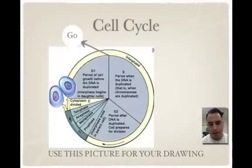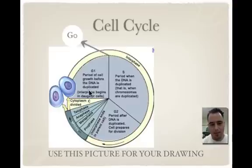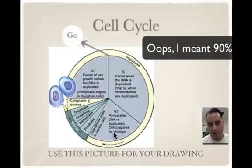Here we have a drawing you want to use for your drawing. And here we have interphase, which is where the cell spends 99% of its time in. Interphase is really three phases: G1, S, and G2.